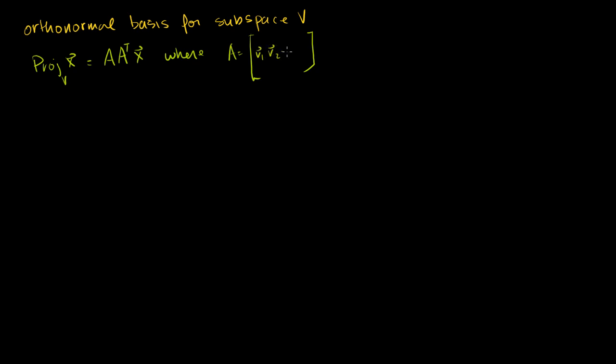So let's say v1, v2, all the way through vk. These are the basis vectors, orthonormal basis vectors for v.